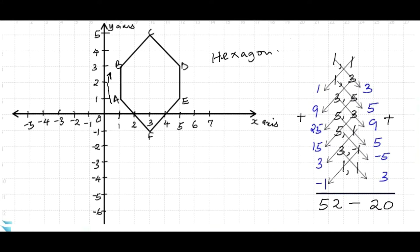So then to find area, I'll simply say a half multiplied by the absolute value of 52 minus 20. This will be a half multiplied by 32, which gives me 16 square units.